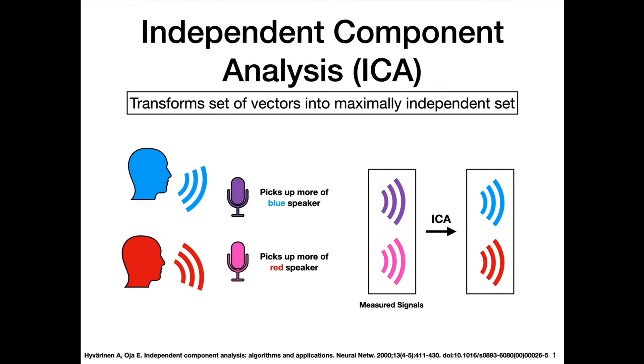The purple and pink are your measured signals. The blue and the red are the Independent Components or the source of the information or the audio.